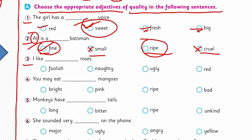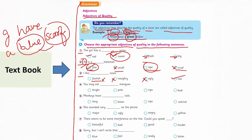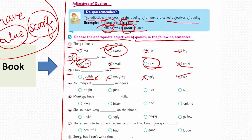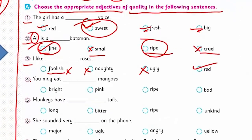The third one: 'I like ___ roses.' Options include foolish, fully, naughty, ugly, or red. Roses can't be foolish, naughty, or ugly in this context. Yes — 'red roses.' This is an example of color as a quality adjective. The fourth one: 'You may eat ___ mangoes.'